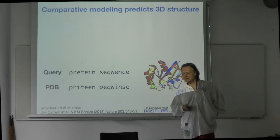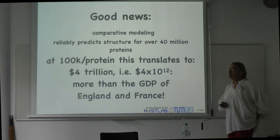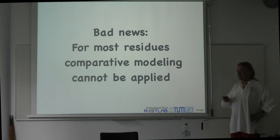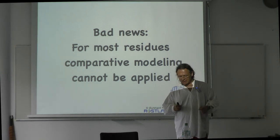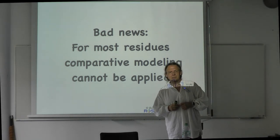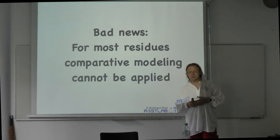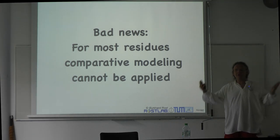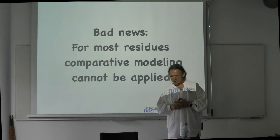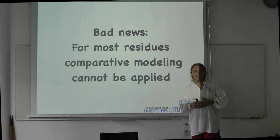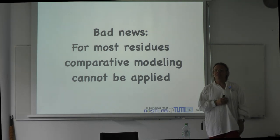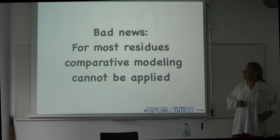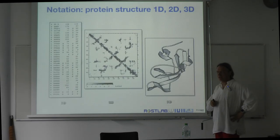Homology modeling simply uses the feature that similar sequences have similar structures, so we can cover about half the protein universe. Bad news is for most of the proteins we cannot do anything. We can also not use MD simulations to predict structures — that works for some short proteins but it's not good enough to do everything. We also cannot use AlphaFold at this scale of 75 million proteins. What is available on that scale is a simplified prediction method — we begin with secondary structure prediction.